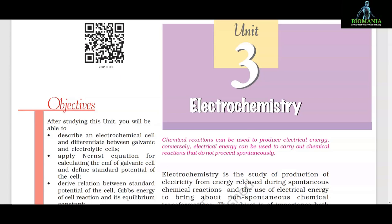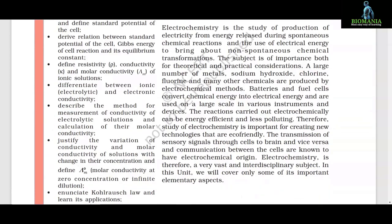Chemical reactions can be used to produce electrical energy. Conversely, electrical energy can be used to carry out chemical reactions that do not proceed spontaneously. Electrochemistry is the study of production of electricity from energy released during spontaneous chemical reactions and the use of electrical energy to bring about non-spontaneous chemical transformations.